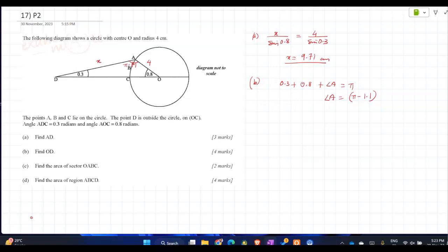So now you have to find OD. So OD upon sine pi minus 1.1 is equal to 4 upon sine 0.3. 1.1 I am getting. Well, the final answer is 12.1.